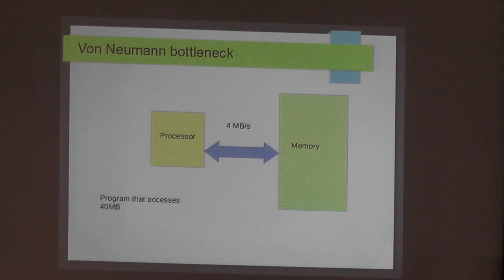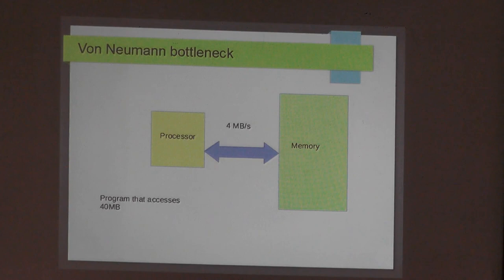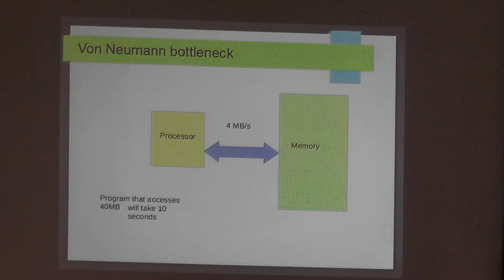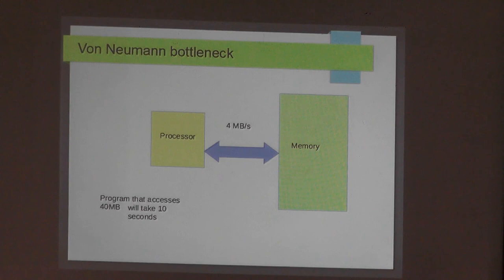Imagine your bus can transfer 4 megabytes per second. Without knowing anything else about the processor, if the program is going to touch 40 megabytes, it's going to run in 10 seconds. That's what the Acorn people discovered through experimentation — the motivation for the ARM, the Acorn RISC Machine. They tested lots of different processors and saw that by the time you got to the Z80 or 6502, memory access was the limitation. So memory access was the bottleneck, not the processor.